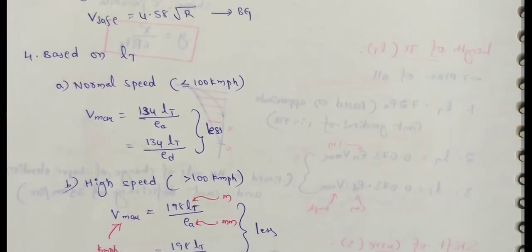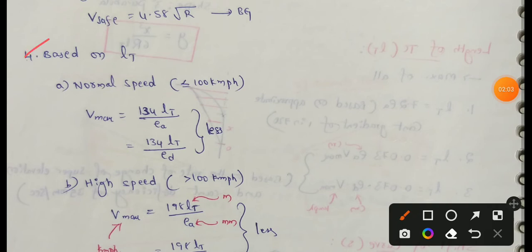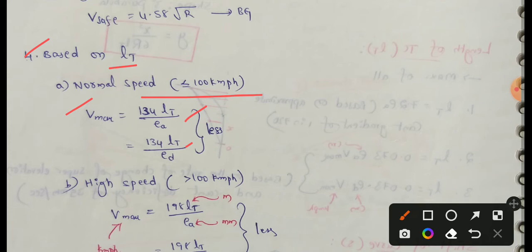Fourth one is based on the length of transition curve. For normal speed, which is less than or equal to 100 km/h, maximum speed equals 134 into Lt divided by Ea, where Lt is the length of transition curve and Ea is actual super elevation. Also, maximum speed equals 134 into Lt divided by Ed, where Ed is cant deficiency. The lesser value gives the maximum speed.